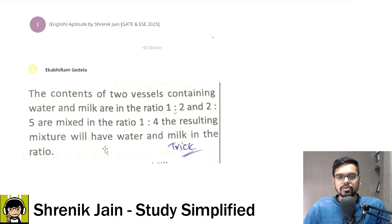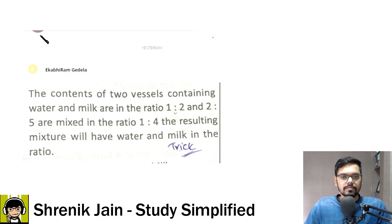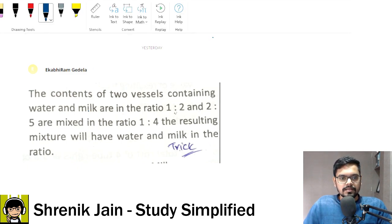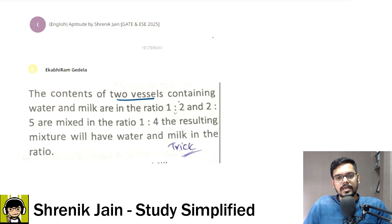So I guess you have solved the question. Let us see the solution now. First of all, they are saying we have two vessels. Let us say this is the story of vessel A. This is the story of vessel B.